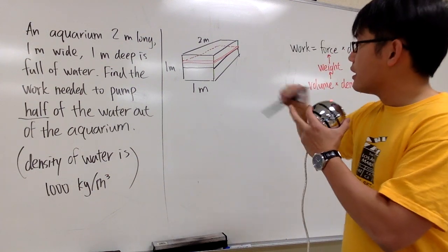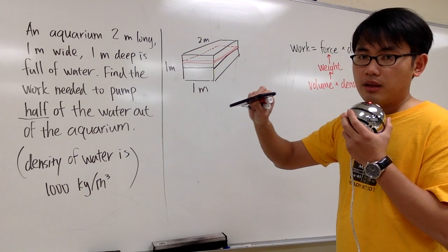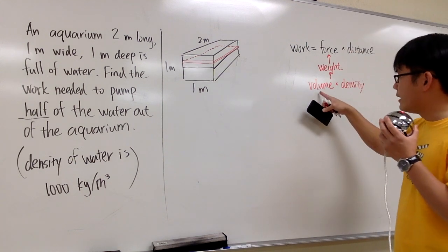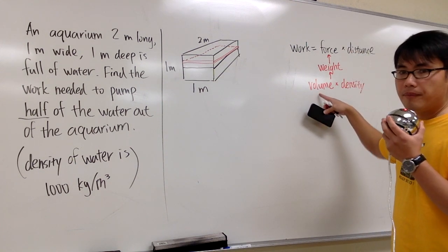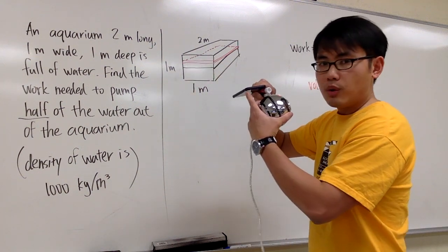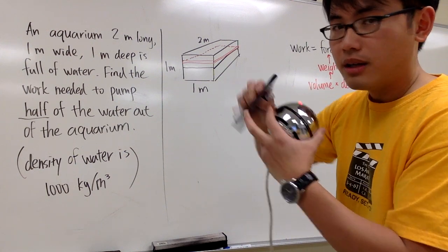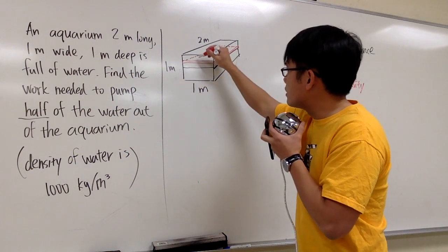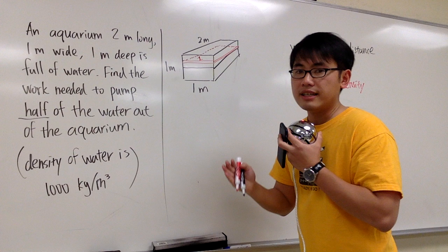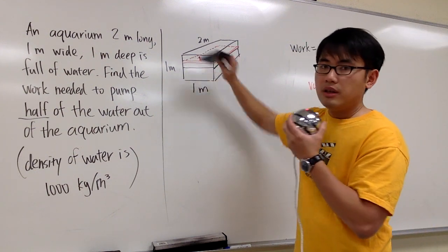As you can see, this right here is pretty much the slice that we're talking about. The goal is we will have to write an expression for the volume of this slice of the water. Do we know what's this measurement? The front part right here, we know it's equal to 1 meter. That's really nice because it never changes. It's always 1 meter.